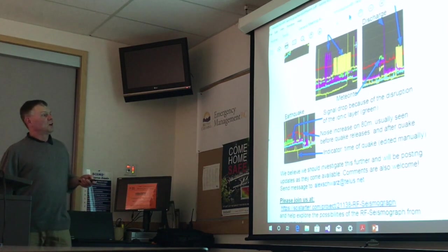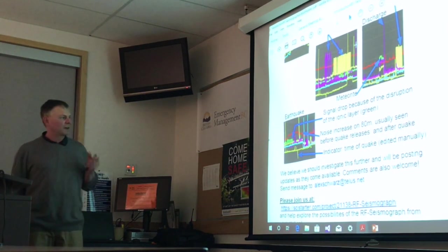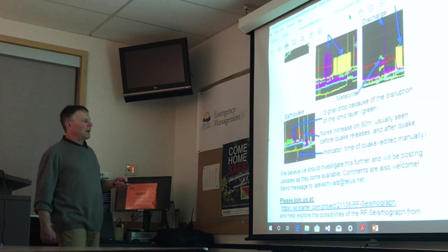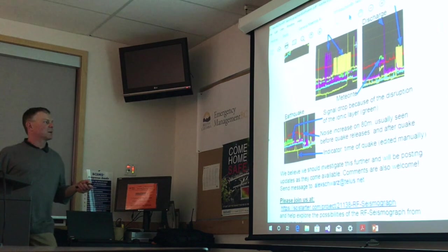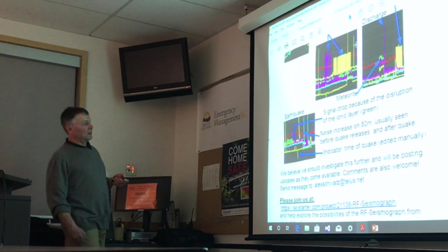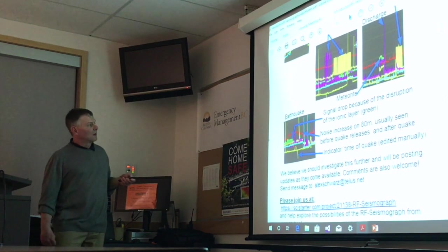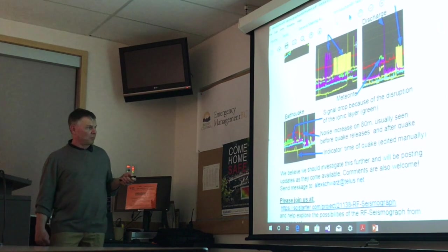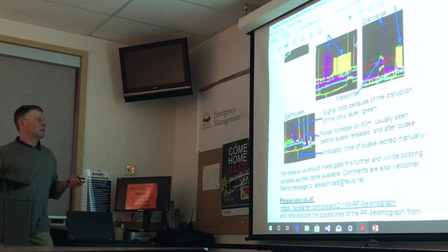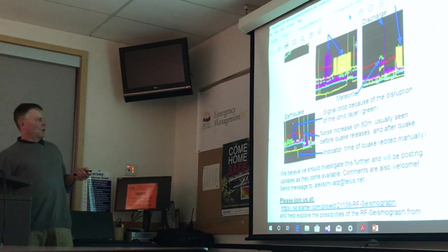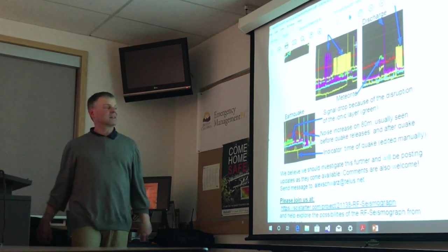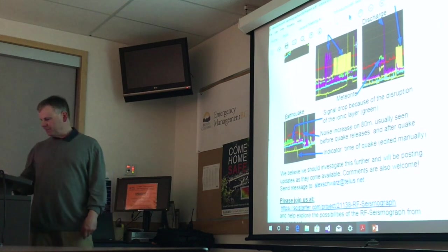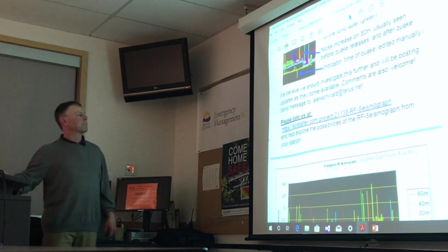Here is what an earthquake looks like. First, the 80 meter band noise level goes up — this is the 80 meter noise seen before and after the quake. We edit in a small spike marker manually to indicate the time when the event happened. About two hours before the event the RF noise goes up quite steeply.